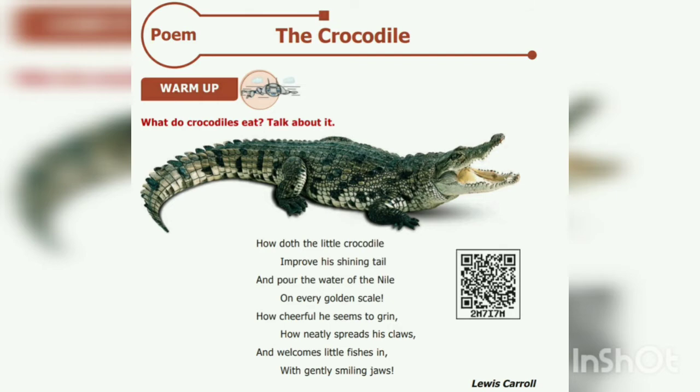First stanza: How doth the little crocodile improve his shining tail, and pour the waters of the Nile on every golden scale. Second stanza: How cheerful he seems to grin, how neatly spread his claws, and welcomes little fishes in with gently smiling jaws.